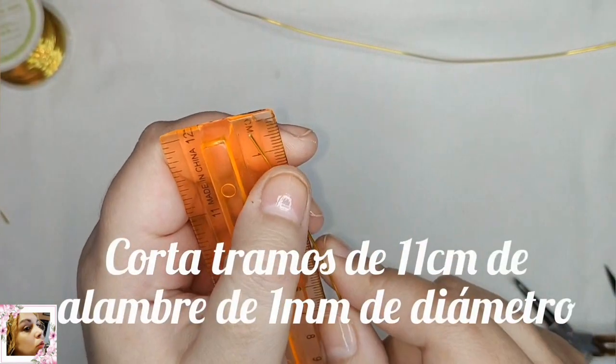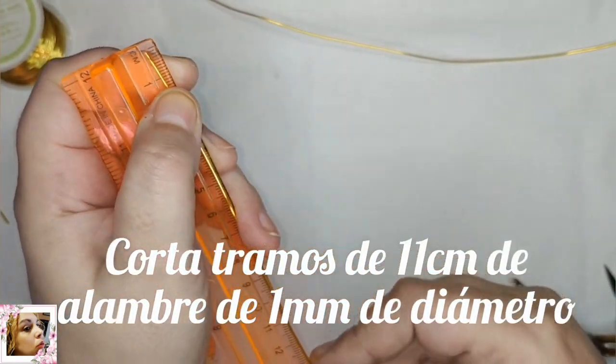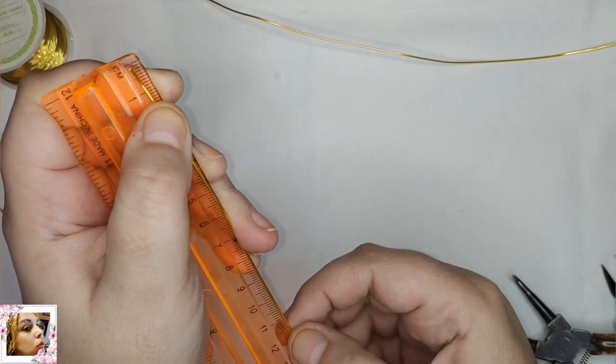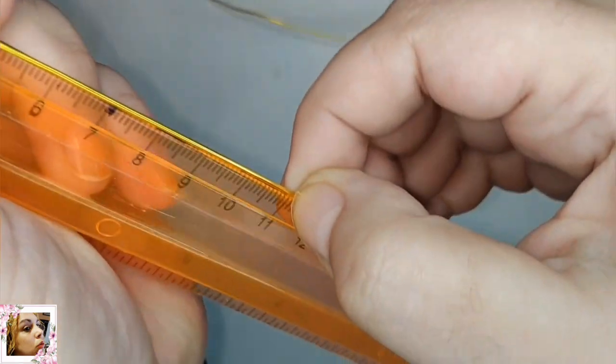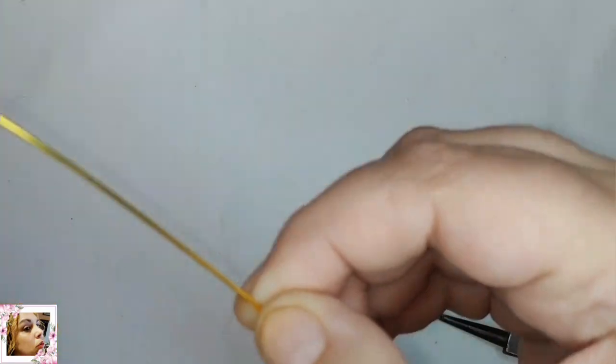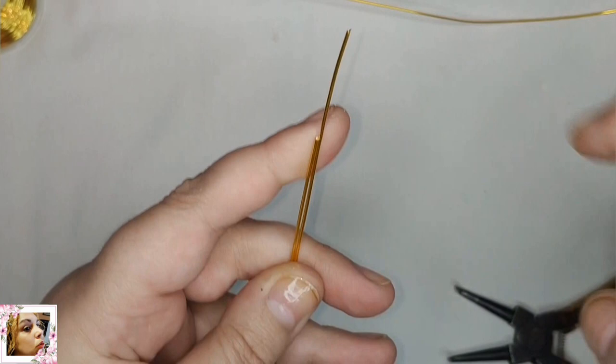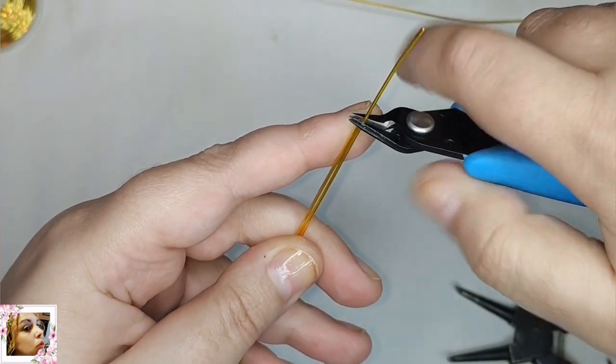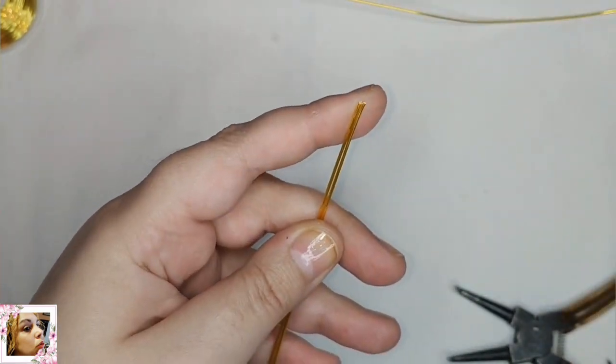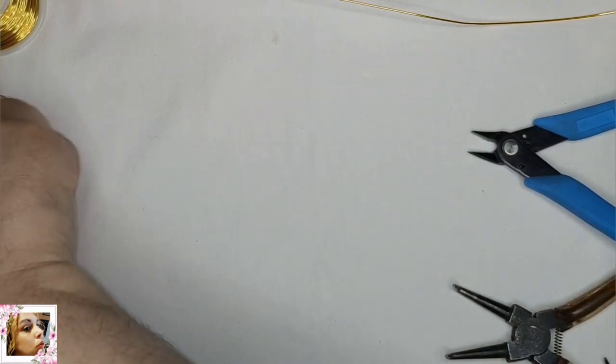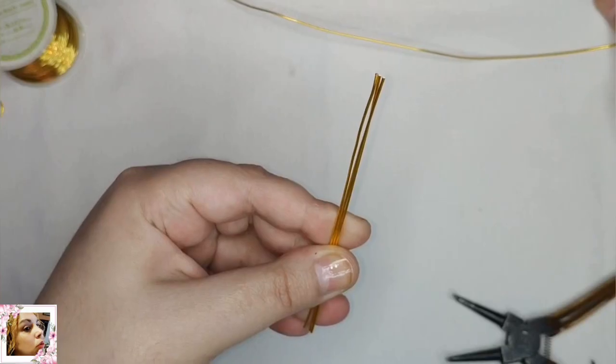Esto va a ser para la base de la pulsera. Y ahora vamos a cortar de alambre de 1 mm, tramos de 11 cm. Vamos a cortar más de uno porque esta es la decoración que lleva la pulsera.